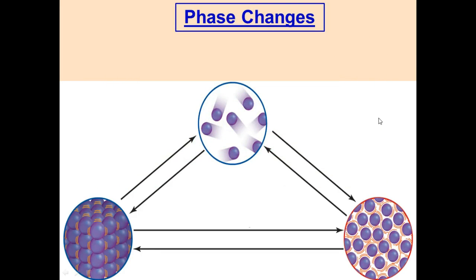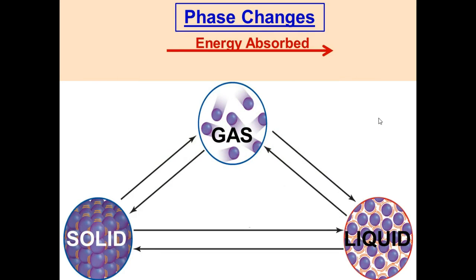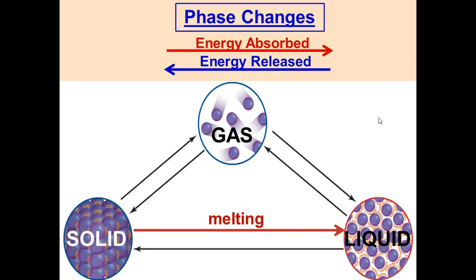Now we're going to talk about phase changes. On this diagram, red arrows represent energy absorbed and blue arrows represent energy released. Energy absorbed means the substance gains energy from the surroundings; energy released means it loses energy.